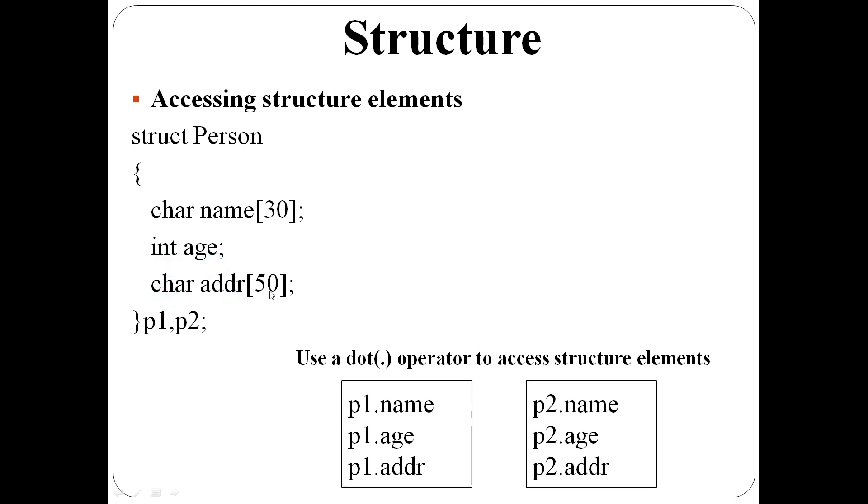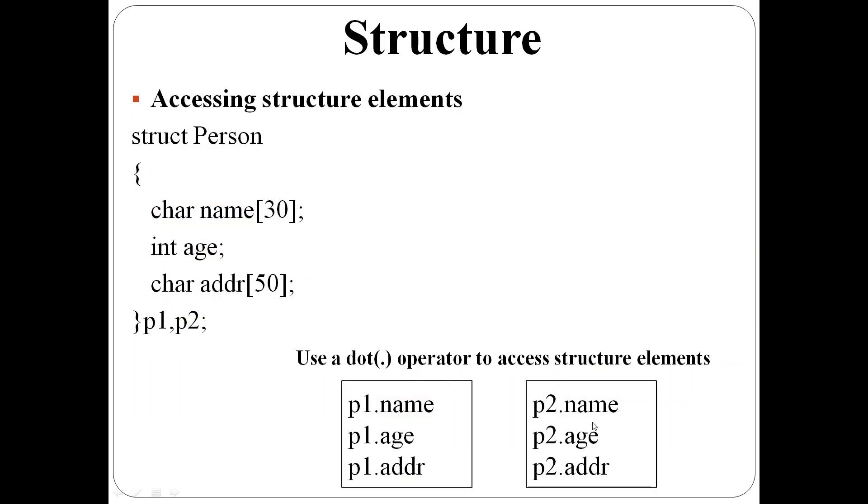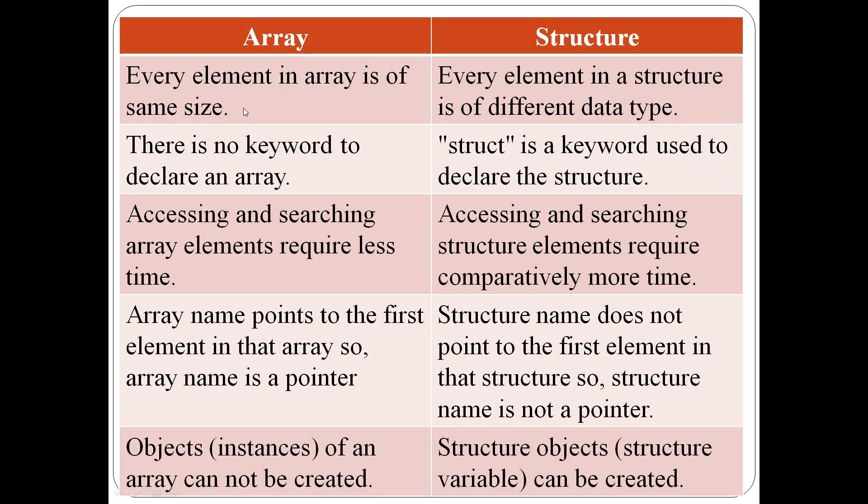Array elements are stored in contiguous memory location. But structure elements may not be stored in continuous location. Array elements are accessed using index number, using square bracket. But structure members are accessed using dot operator. Every element in array is of same size. But structure elements can have different sizes.